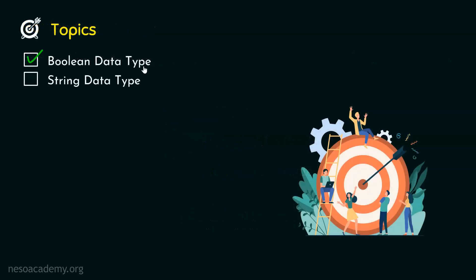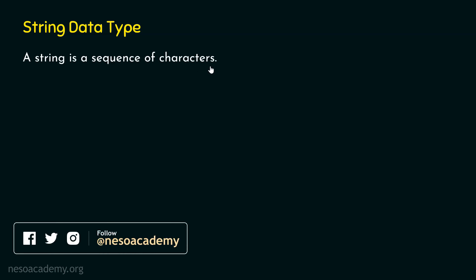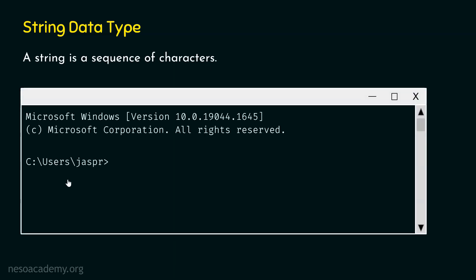Now we know what is a boolean data type. Let's try to understand what is a string data type. A string is simply a sequence of characters — a combination or a sequence of characters. In order to see string in action, and what happens when we try to print a string, we need to get to our command prompt. Let's open our command prompt, and we must type python and hit enter in order to activate the Python interactive shell. After this, we will see these three arrows which means the Python interactive shell is now active. Now let's type this string: hello world. We must understand that the string must be written within double quotes or single quotes — both are correct.